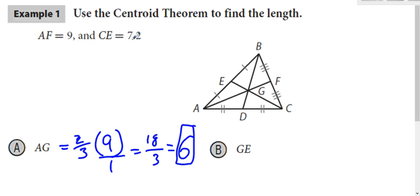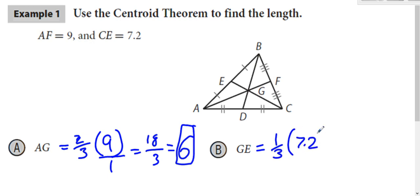We're also told that CE is 7.2, so the entire length is 7.2. GE is not the two-thirds length — it's the smaller side, the one-third. So GE is one-third of 7.2. 7.2 divided by three is 2.4.